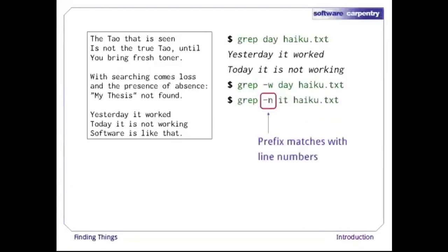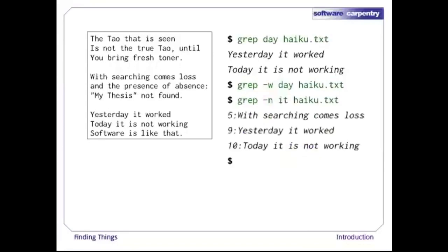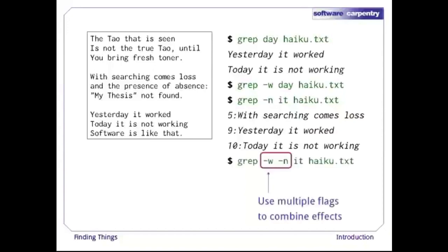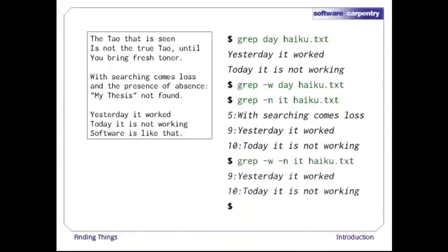Another useful option is -n, which numbers the lines that match. Here, we can see that lines 5, 9, and 10 in the file contain the word 'it', or a word that contains it. As with other Unix commands, we can combine flags to get only whole-word matches with line numbers.